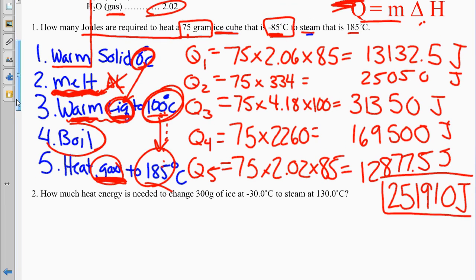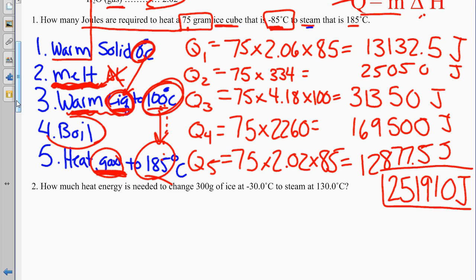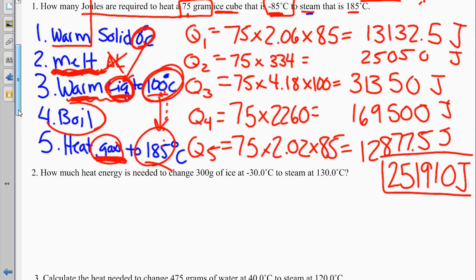This is almost the exact same thing. Problem 2: ice at negative 30 degrees Celsius to steam at 130 degrees Celsius. That means we need to go the whole way — we need all five Q's.